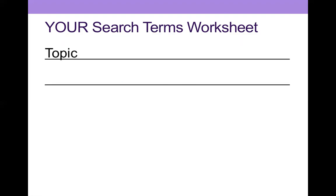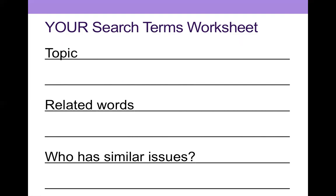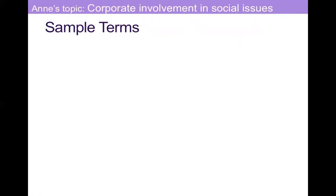What I'd also like you to do — either before or after the Venn diagrams — is come up with your search terms for your topic. These are related words for your topic. I also want you to think about who has similar issues, who cares about this, because that can sometimes lead you to additional search terms or additional places to look.